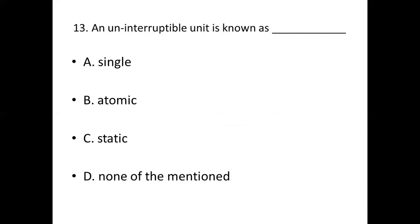Thirteenth bit: An interruptible unit is known as dash. Option A: Single. Option B: Atomic. Option C: Static. Option D: None of the mentioned. Answer: Option B — Atomic.